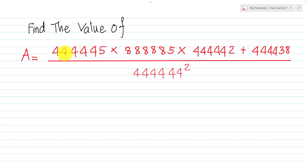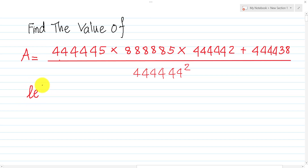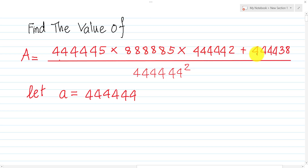We see it has 444445 and 888885, which have a lot of repeated digits. So I can let a equal 444444 — it has 6 fours repeated. And then 8 repeated 6 times gives us the base for the expression terms.